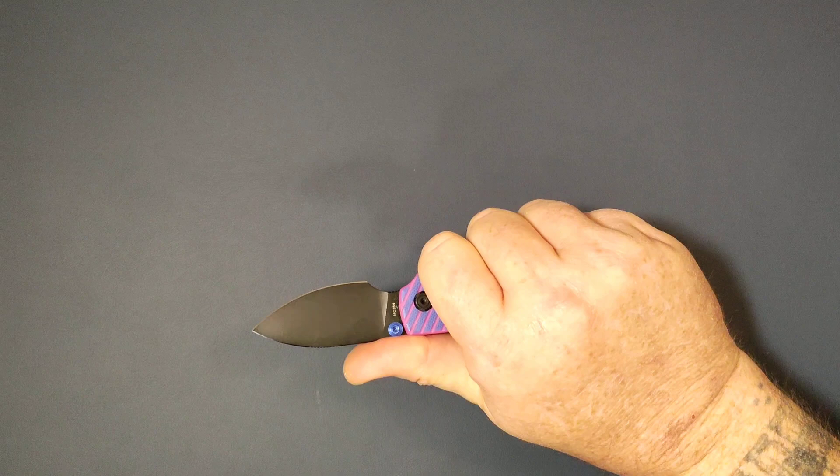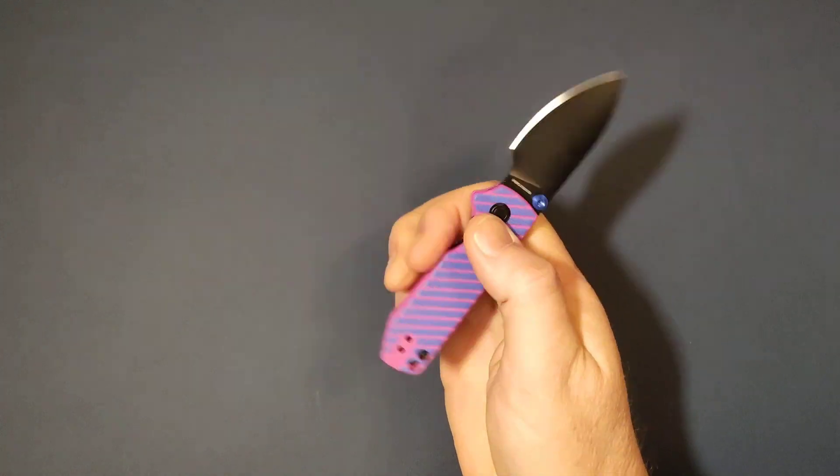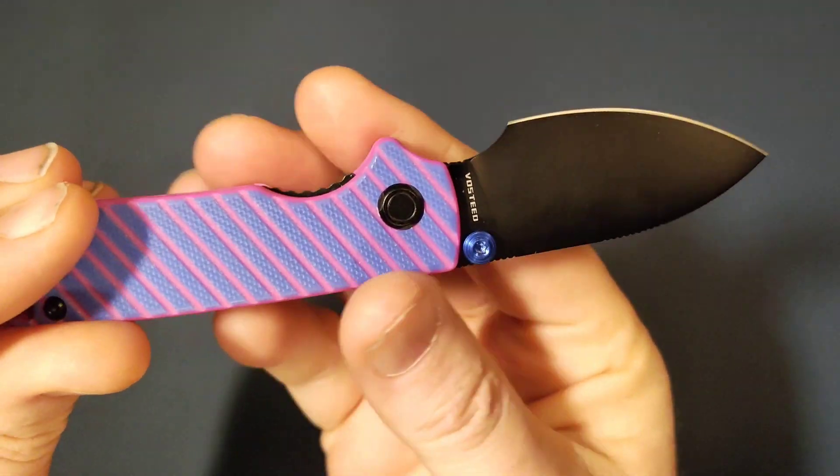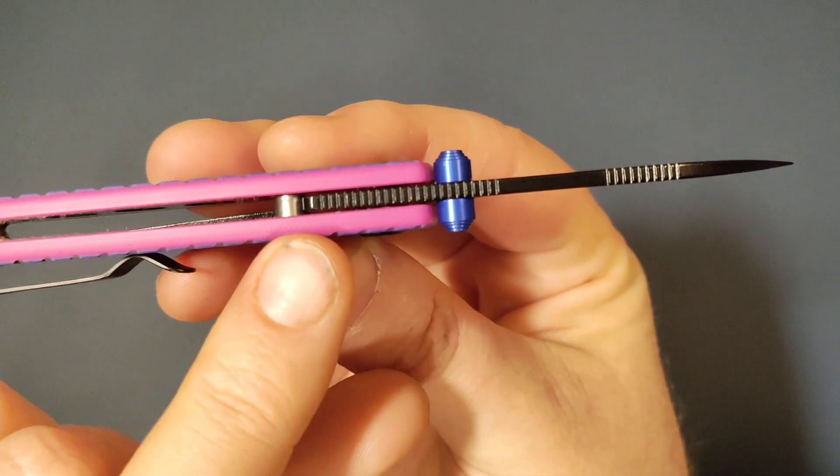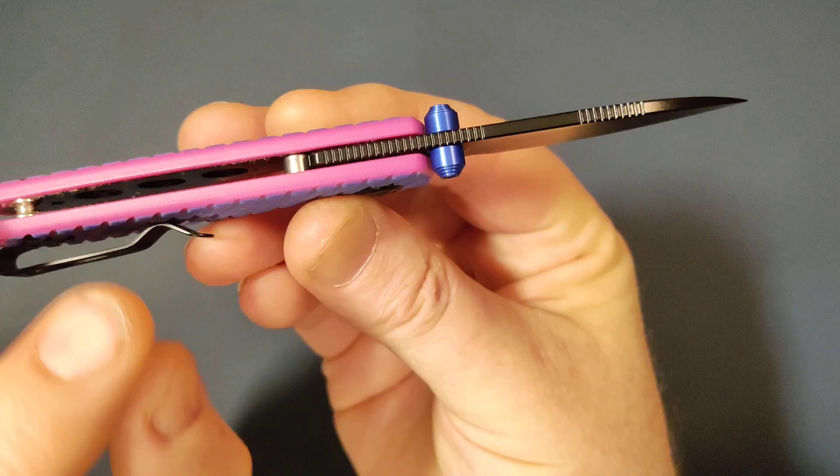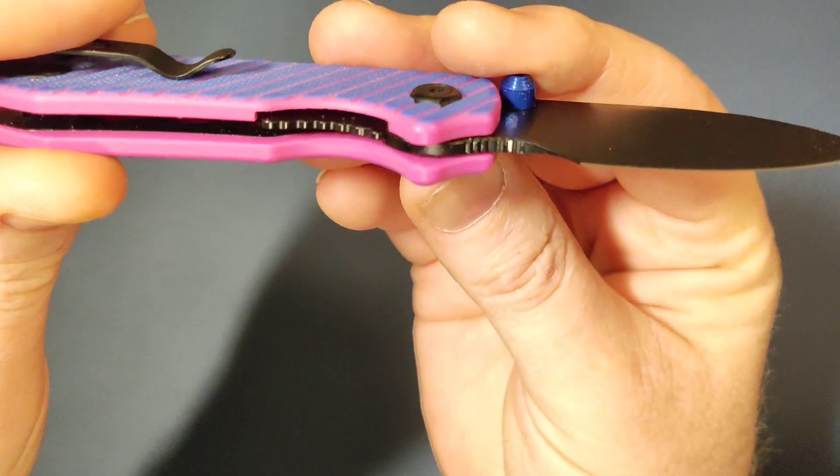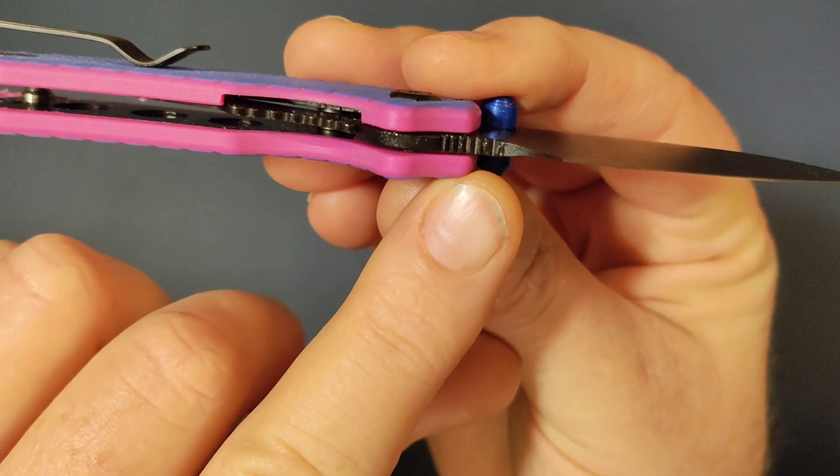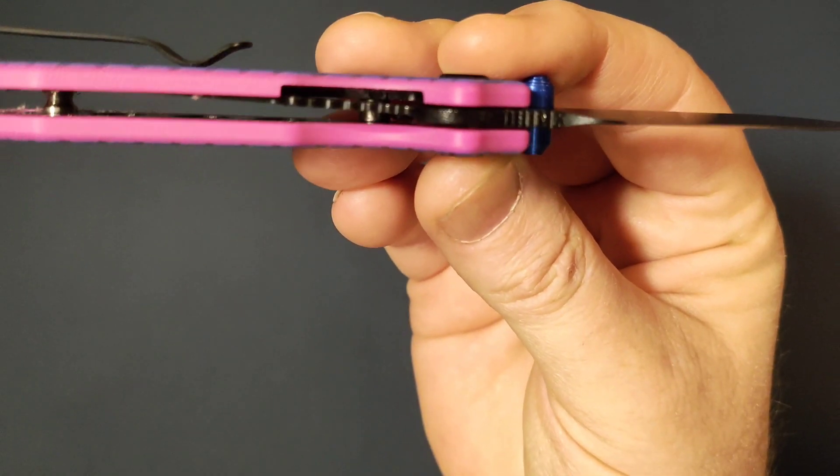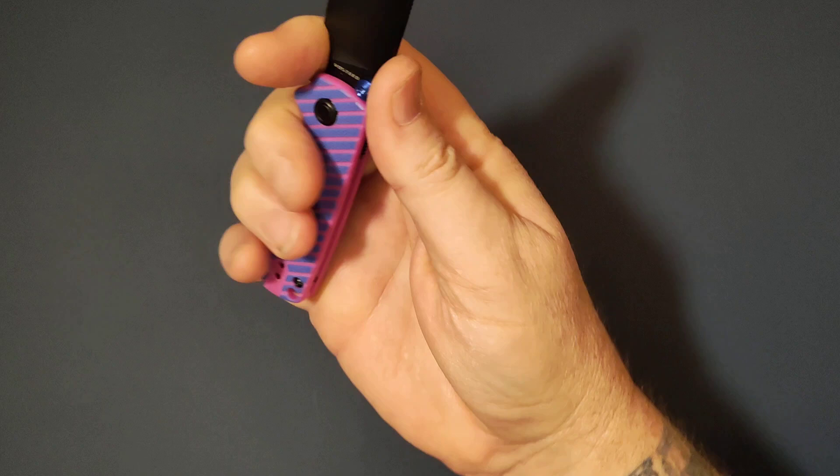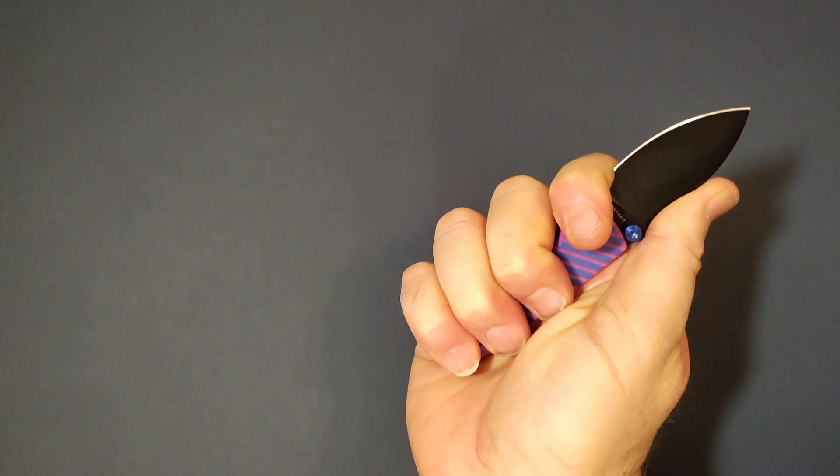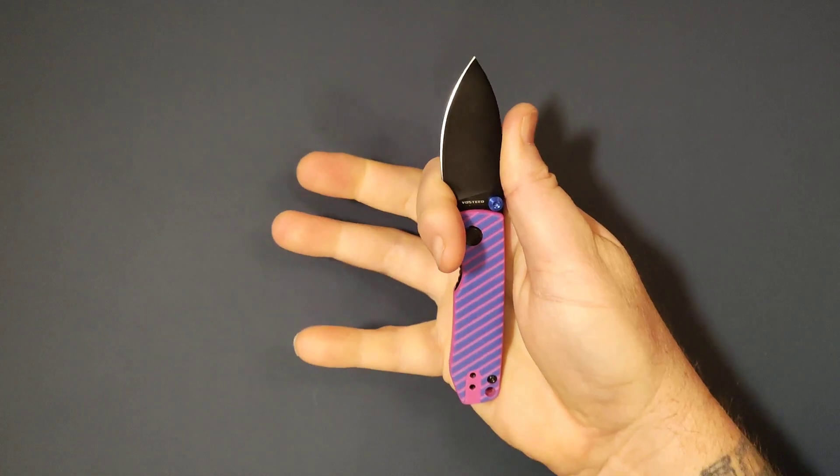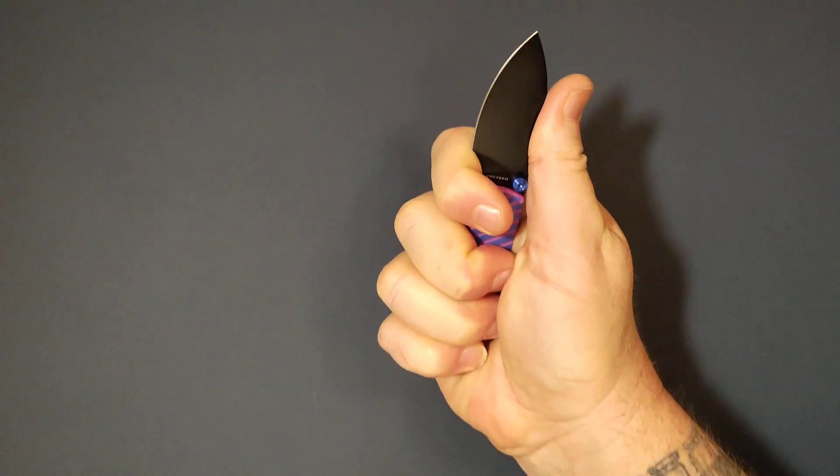They couldn't have picked a better one, even if it's a smaller knife. But with my large hands, with the finger choil right here, let me show you the jimping. You see the jimping right here? Well let me flip it over and show you the finger choil. The finger choil has jimping as well. Can you believe it? Well believe it, it's right there.